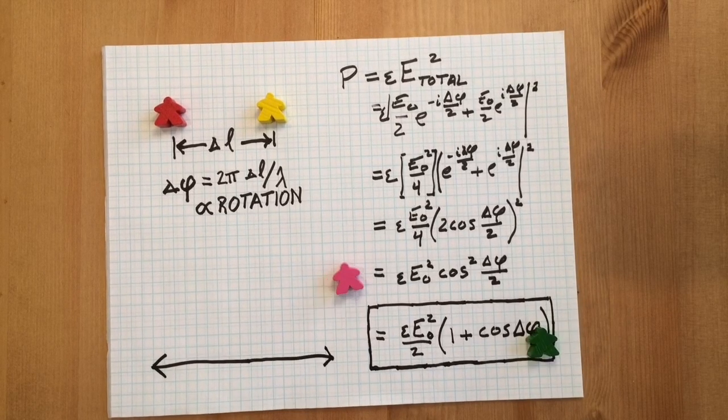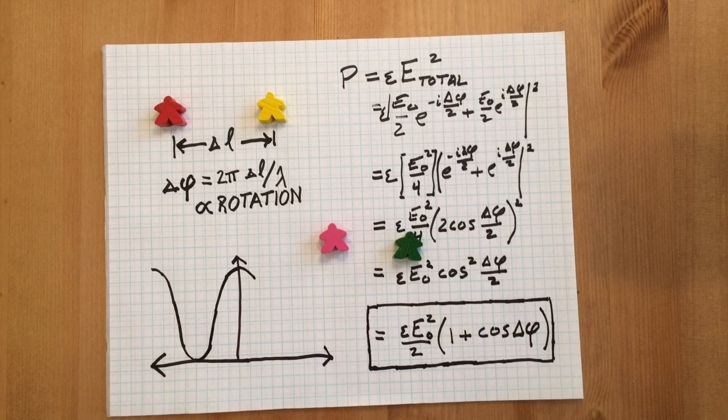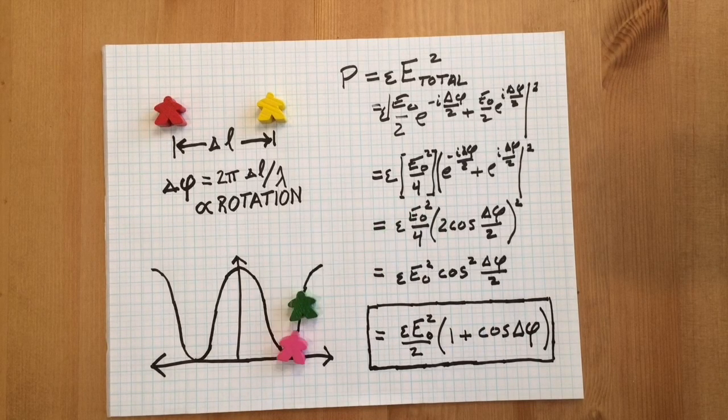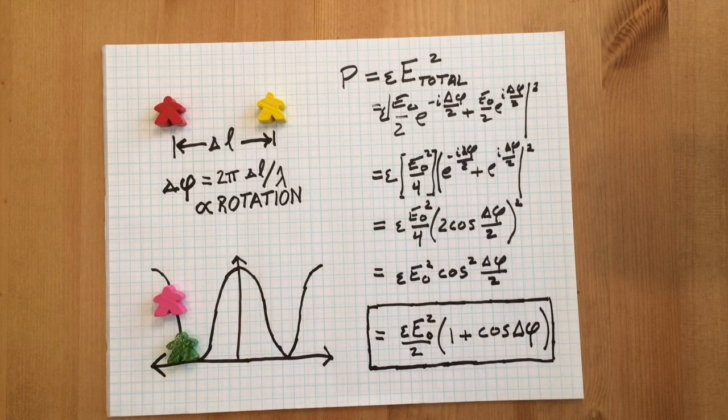If we plot rotation on the x-axis and power on the y-axis, we'll see that as we change the rotation, we'll have power vary between a bright fringe and a dark fringe.